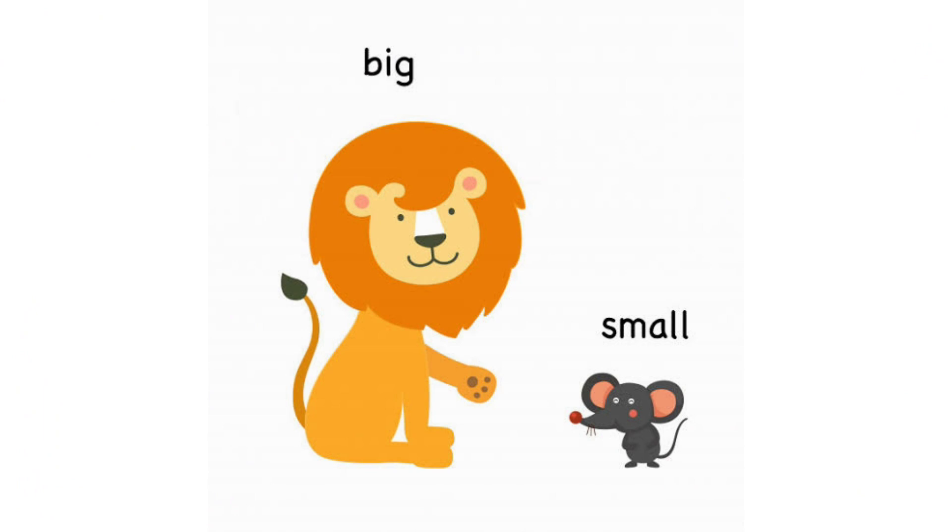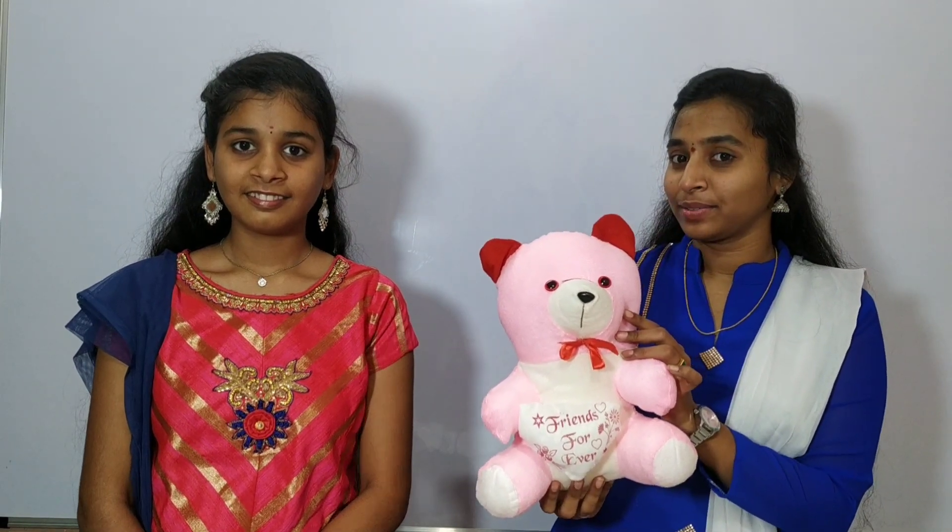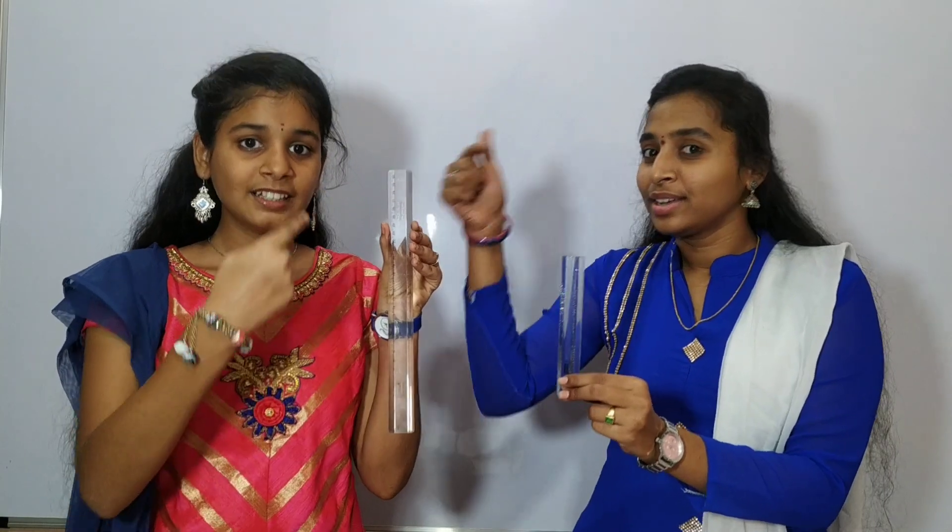Now let us get into the topic big and small. Here is a teddy bear which is big, and this is small. Big, small. Here is a marker which is big, and this is small. Big, small.